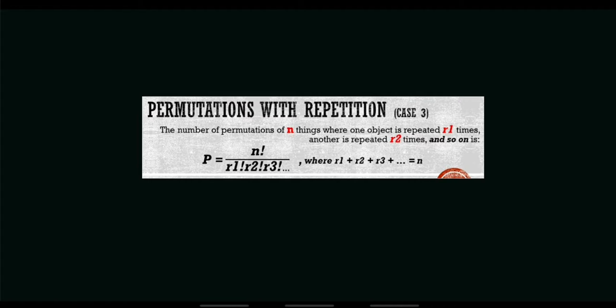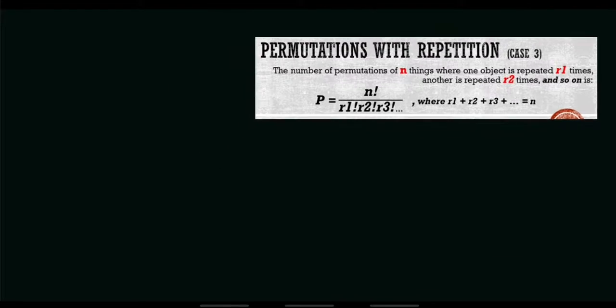Good day everyone. This video is about permutations with repetition — case number 3 under the topic permutations. The number of permutations of n things where one object is repeated r1 times, another is repeated r2 times, and so on, is equal to n factorial all over r1 factorial times r2 factorial times r3 factorial and so on, where the sum of the r values equals n.